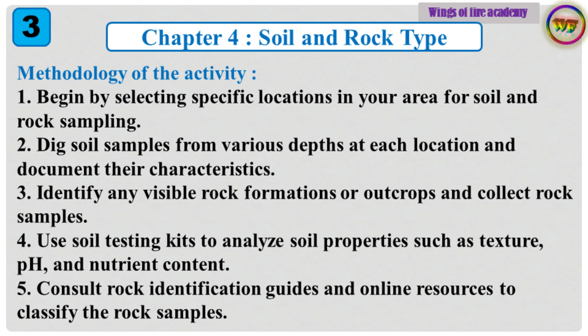Methodology of the activity: 1. Begin by selecting specific locations in your area for soil and rock sampling. 2. Dig soil samples from various depths at each location and document their characteristics. 3. Identify any visible rock formations or outcrops and collect rock samples. 4. Use soil testing kits to analyze soil properties such as texture, pH, and nutrient content.